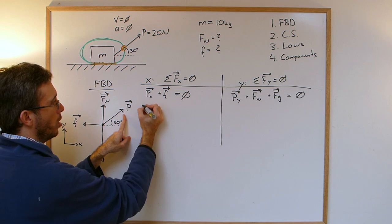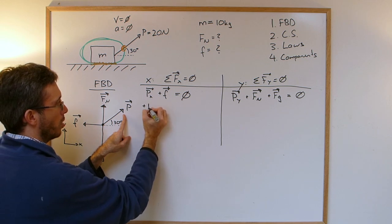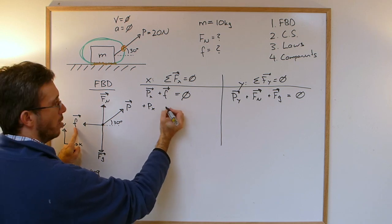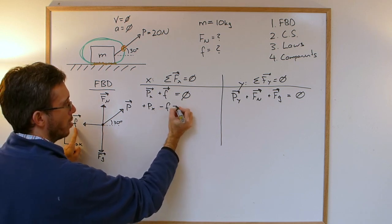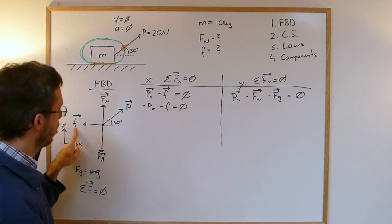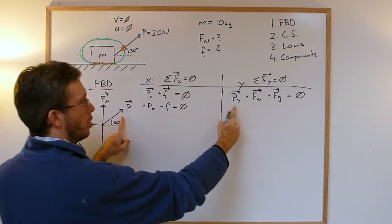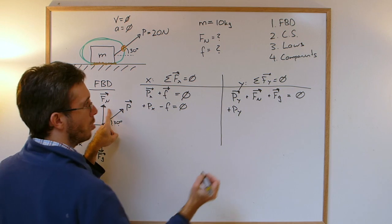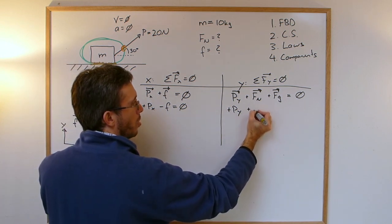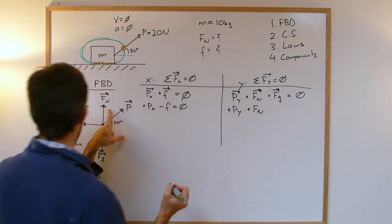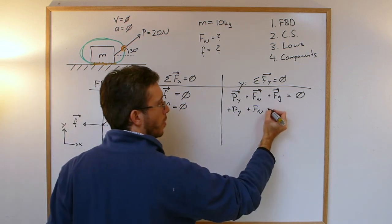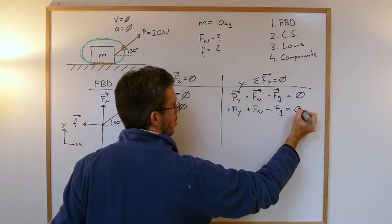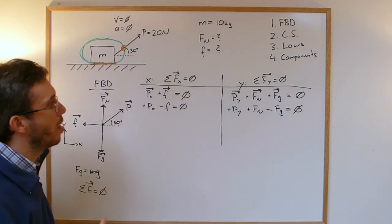So in this case, the push is in positive direction. The friction is in negative direction, zero. The push in y direction is positive. The normal force goes in positive direction, so up. And my gravity goes in negative direction.